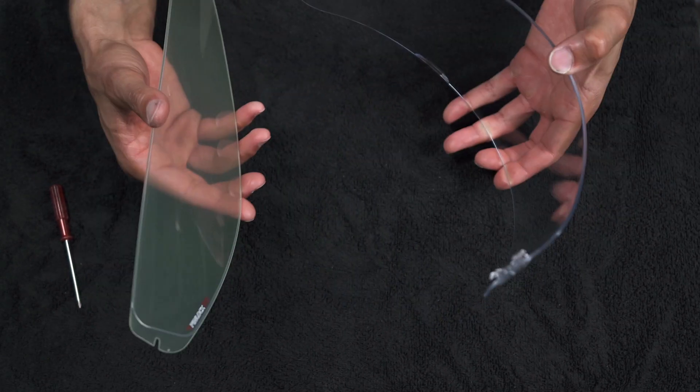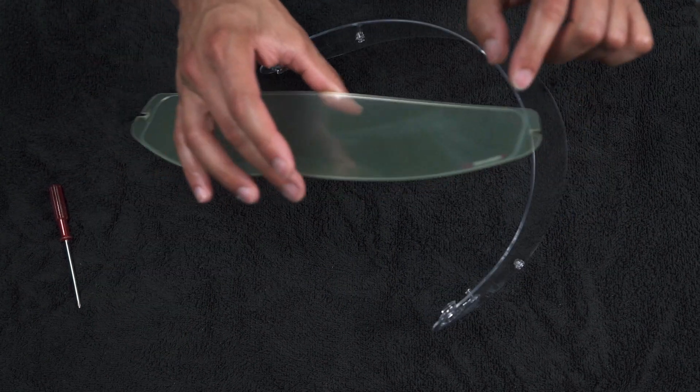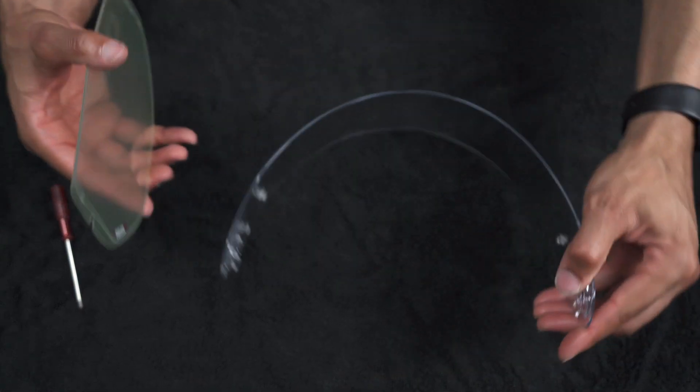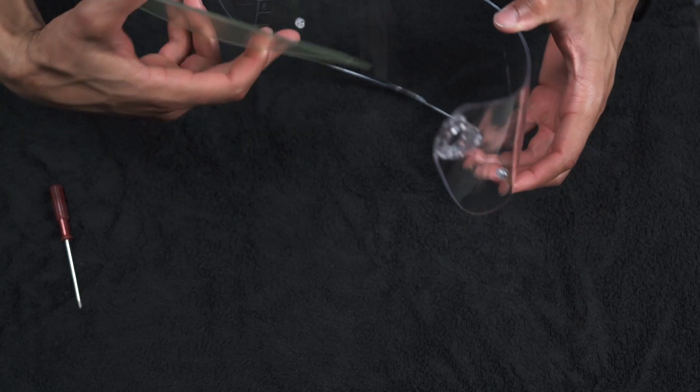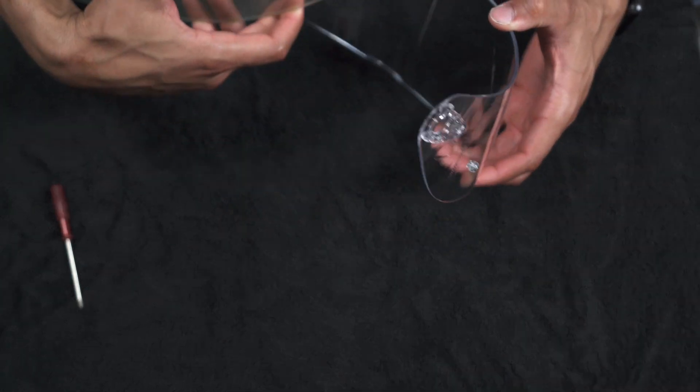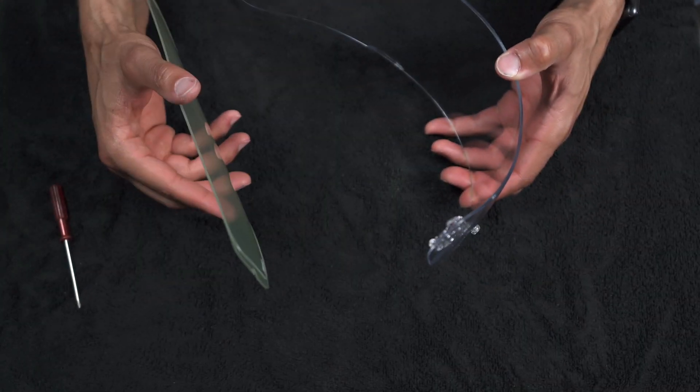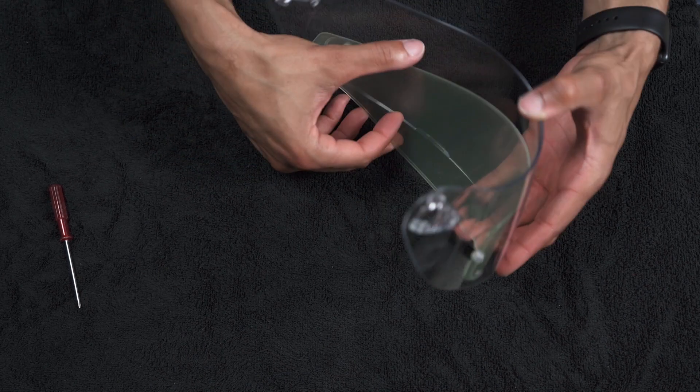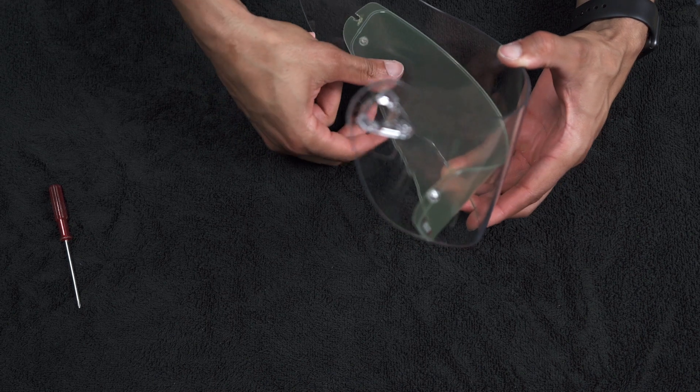Alright, now for the fun part. What you want to do is take the lens, these little grooves here, you want to line them up with the actual Pinlock stubs that are on the visor itself. I'm going to line it up. Bear with me guys, it might be a minute trying to maneuver this thing in here.